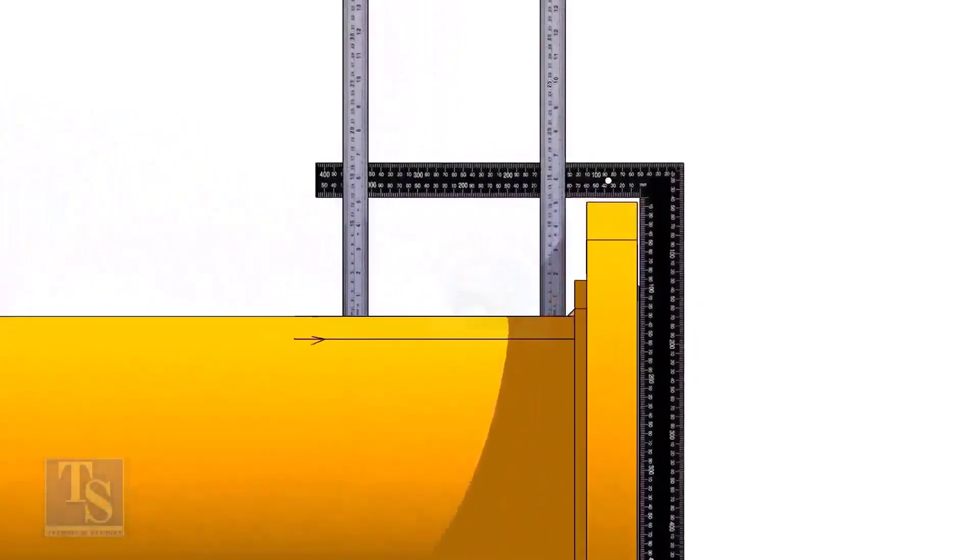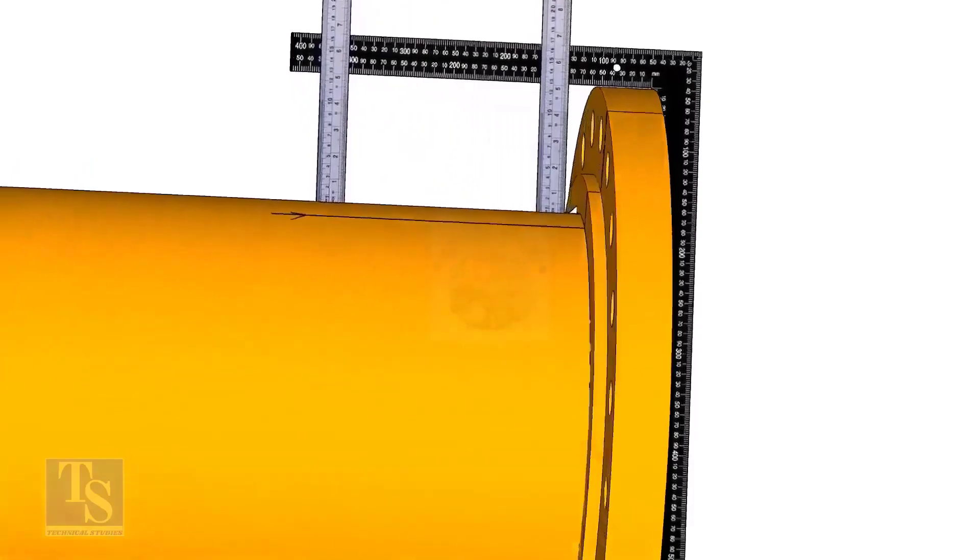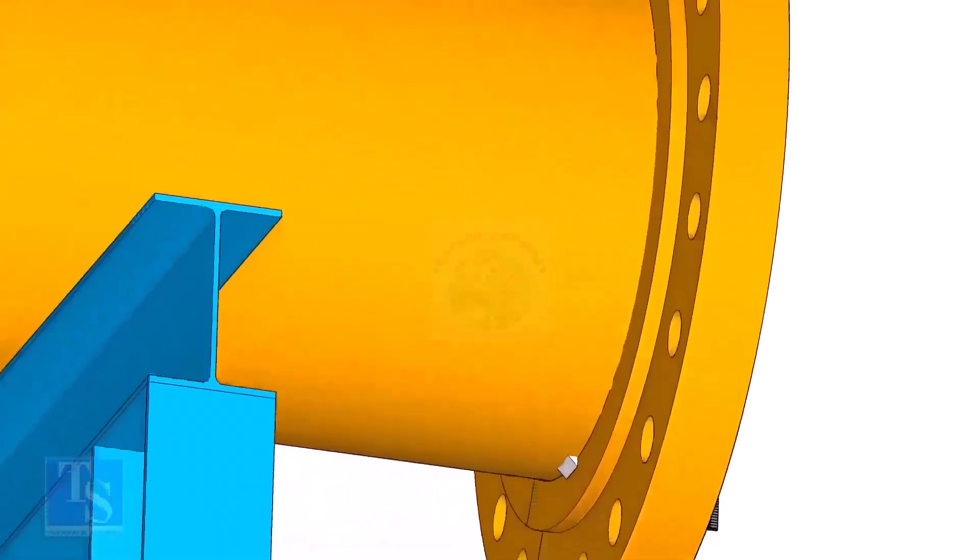Tack weld on the top of the pipe with the flange and check the squareness. If correct, tack weld at the bottom side also.